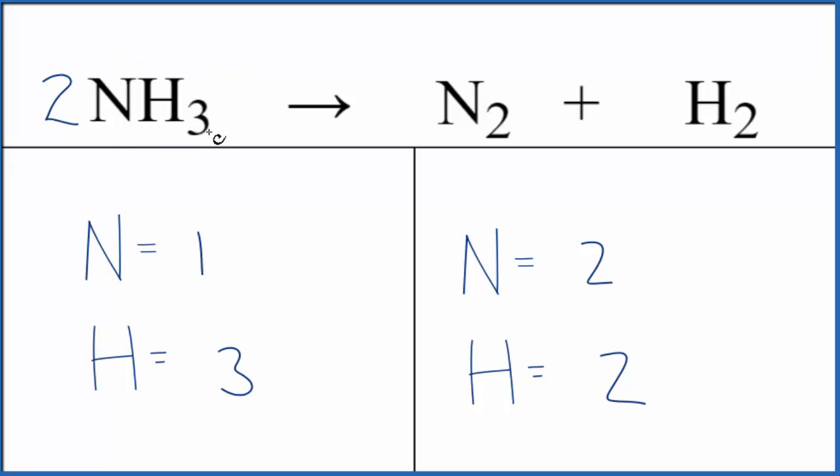This two, it goes to everything. So we have three times two. That'll give us six. Now we have an even number and one times two. That gives us two nitrogens. It actually balances the nitrogens.